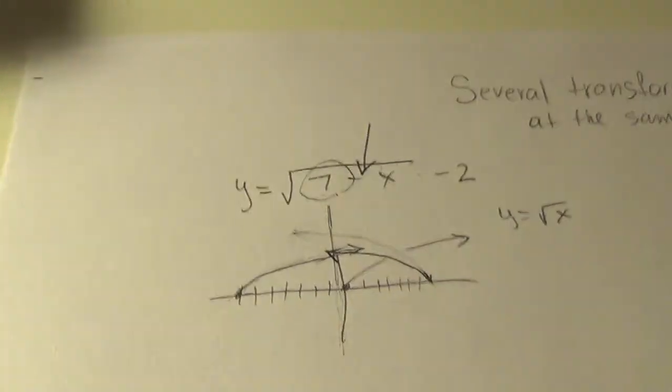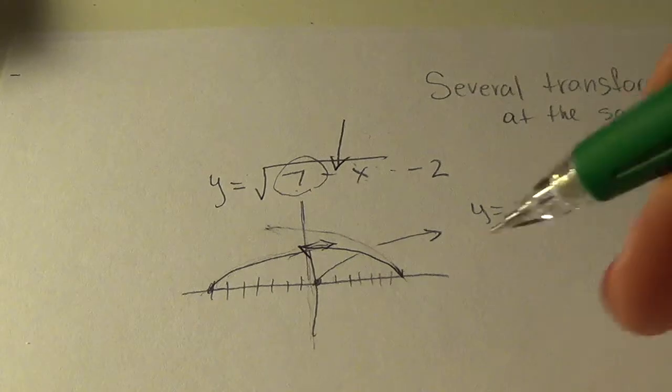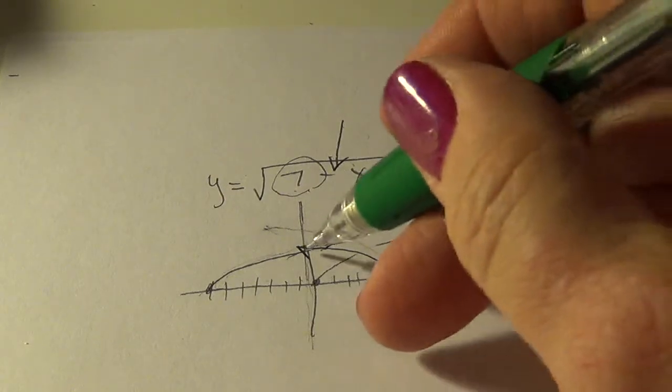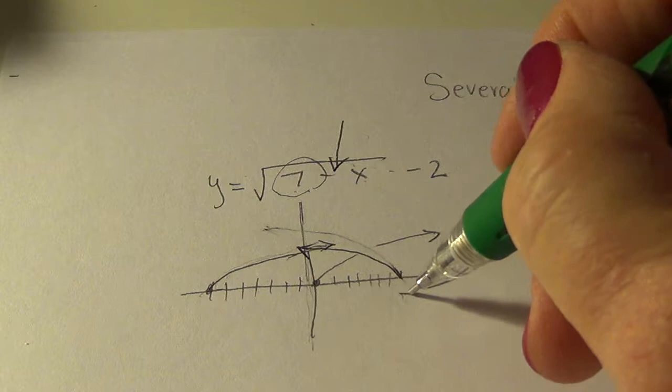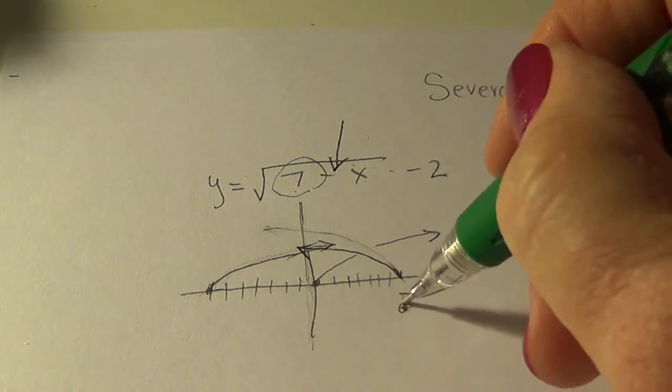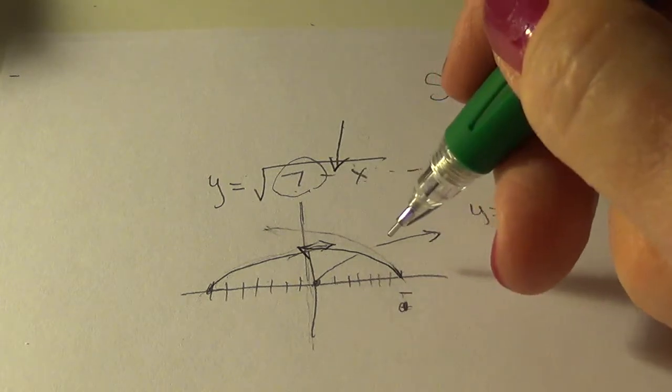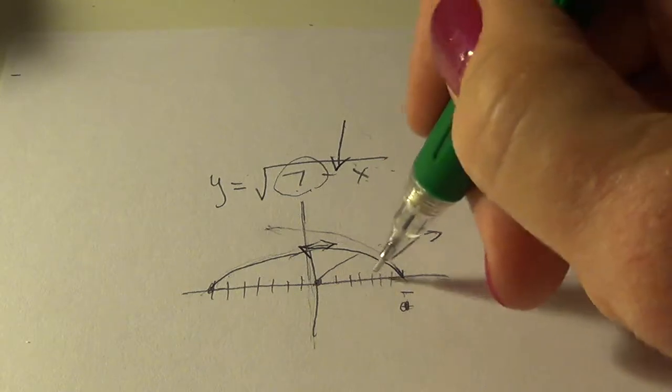And lastly, we do the vertical translation. There is one. And this tells us to go down two. So this would go down two. So our final answer is right here.